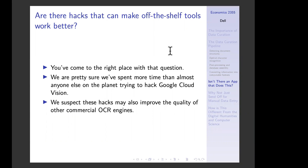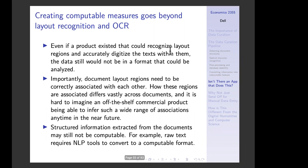You might be wondering: are there hacks that can make off-the-shelf tools work better? We've spent more time than anyone trying to hack Google Cloud Vision and make it work well, and I'll share some of what we've learned in the course. Creating computable measures goes beyond recognizing layouts and doing OCR — you need to correctly associate different content regions with each other. How these regions are associated differs vastly across documents and even within documents, and it's hard to imagine an off-the-shelf commercial product able to infer such a wide range of associations. Raw text also requires natural language processing to convert it into a computable format.